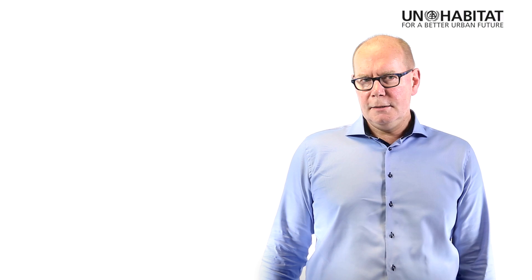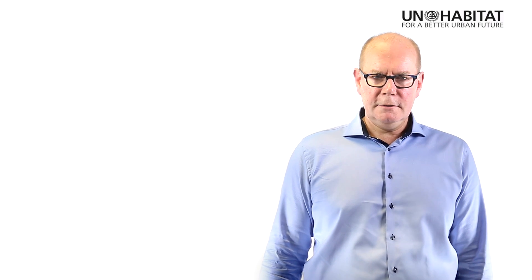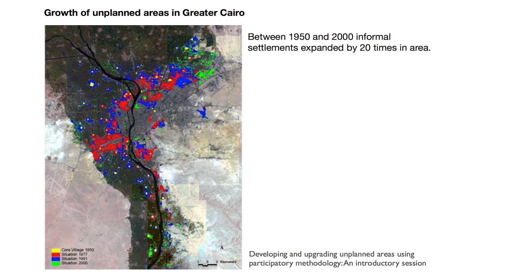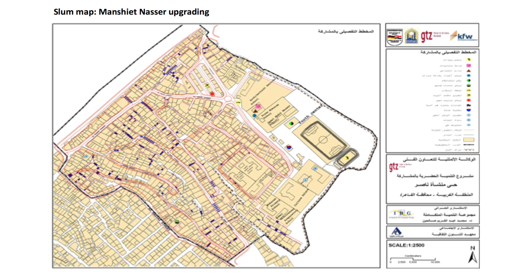It's not only NGOs and CBOs that use participatory approaches — governments too can do it. In Cairo, GTZ helped the Egyptian government and the city of Cairo work together to build an information database based on imagery, also making use of participatory approaches. This enabled them to map over a period of 50 years how informal settlements had expanded in the city, and then to target those settlements particularly in need of attention, making more detailed maps such as the map of Munshi Nasser used for upgrading of that settlement.